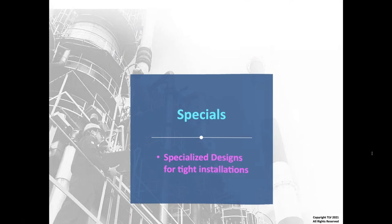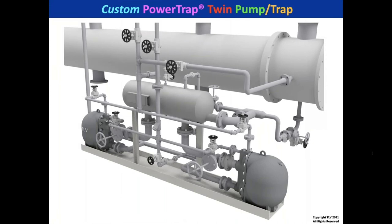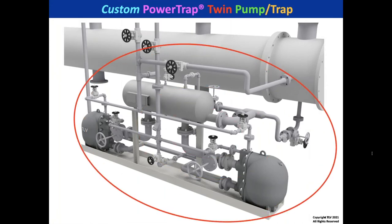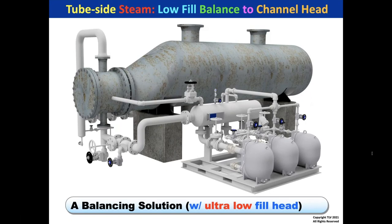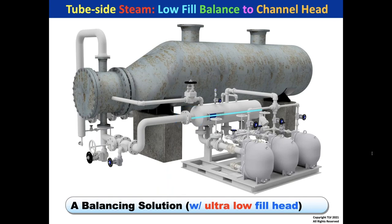For specialized designs in tight existing installations, you can use a compact layout with twin units, ensuring all proper balancing is maintained along with the reservoir and balance connection. In one application with a large reboiler where the channel head flange was less than 3 feet off the ground, we looped down, went up into a reservoir, and entered the center of the reservoir rather than the top. We paid close attention to the reservoir line to ensure the water level didn't rise above the tube set in the reboiler. This required an extra secondary pressure drainer (SPD) beyond what would normally be needed.